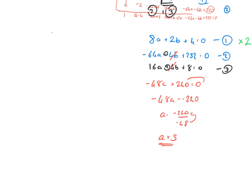Okay, I'm now going to take that a equals 5 and sub it into one of the equations. It doesn't matter which one, so I'm going to sub it into equation 1. Okay, so where do I see a, I'm going to replace it by 5. 8 times 5 plus 2b plus 4 equals 0. 40 plus 2b plus 4 equals 0.